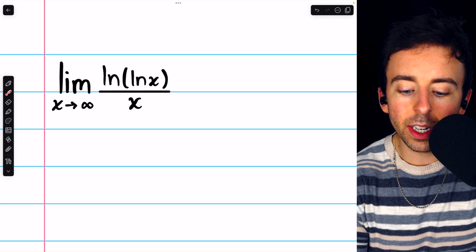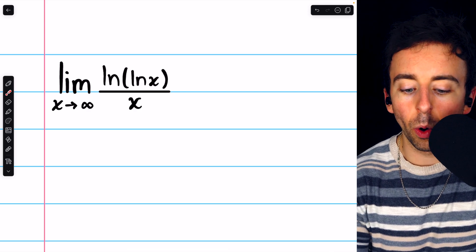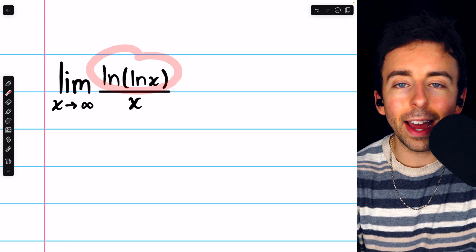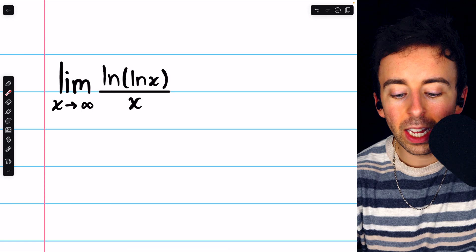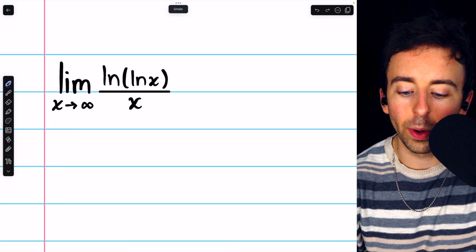As x goes to infinity, the natural log of x also goes to infinity. And so, of course, the natural log of the natural log of x goes to infinity as well. The denominator in this expression is x, so that's obviously going to infinity.